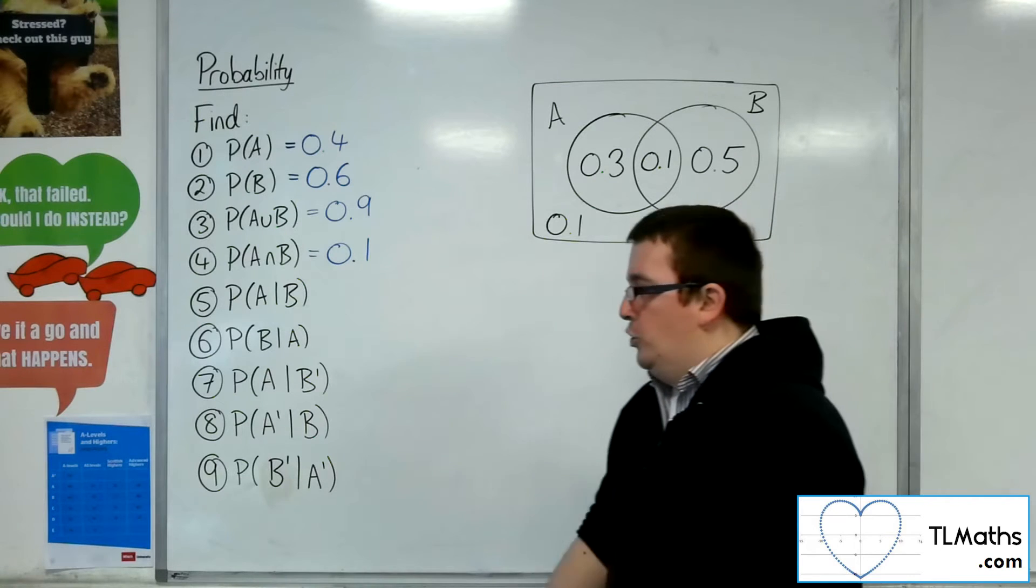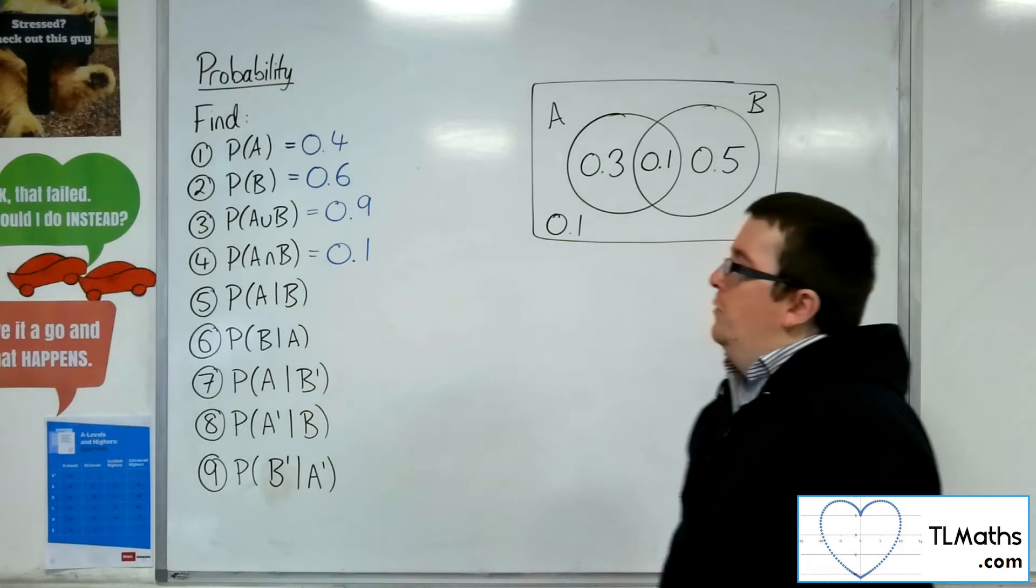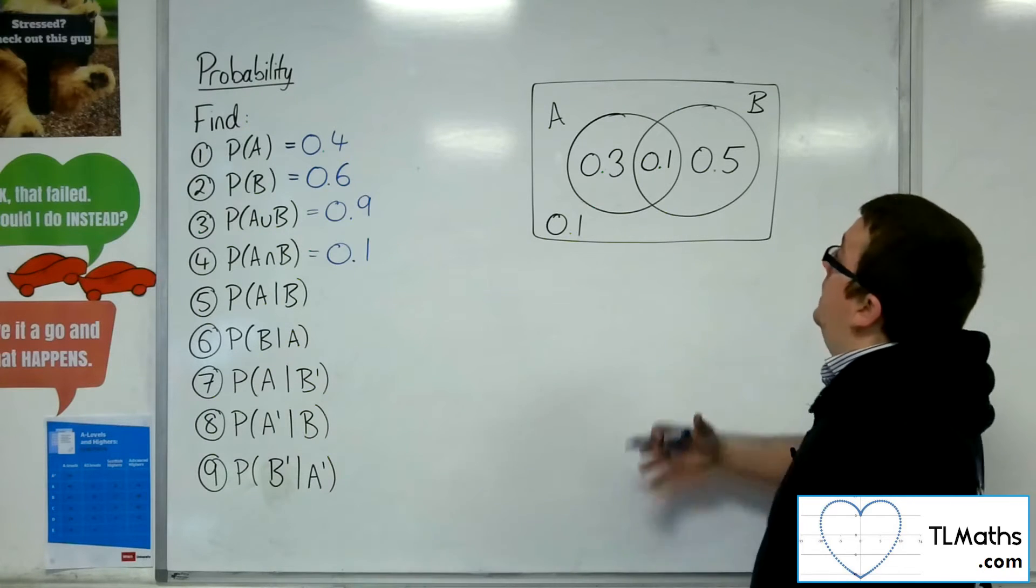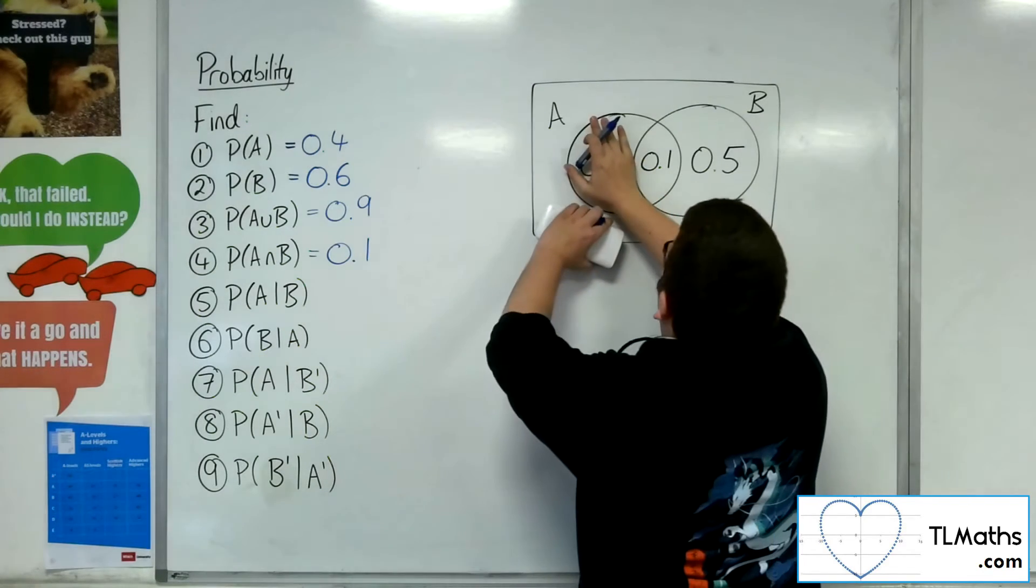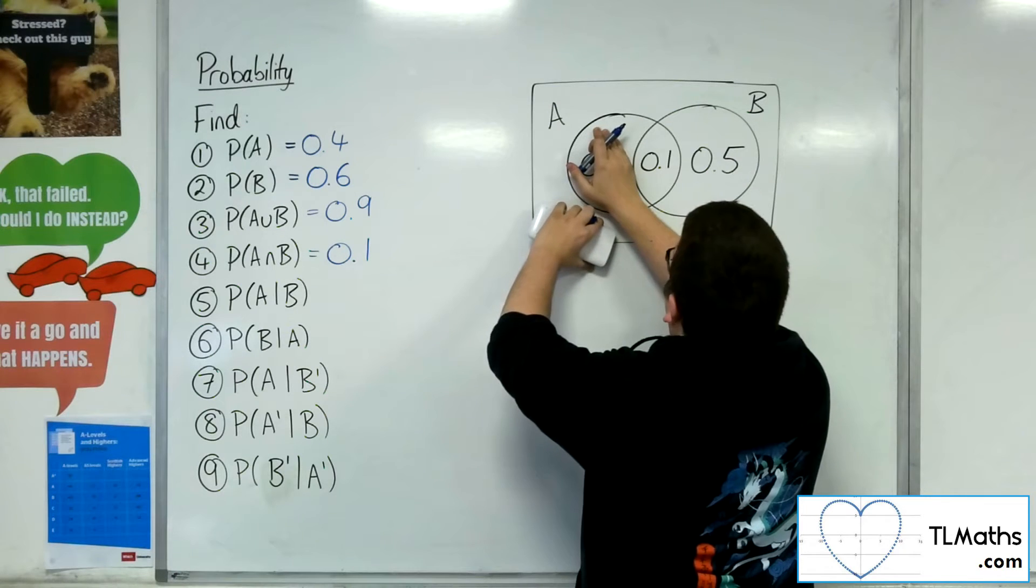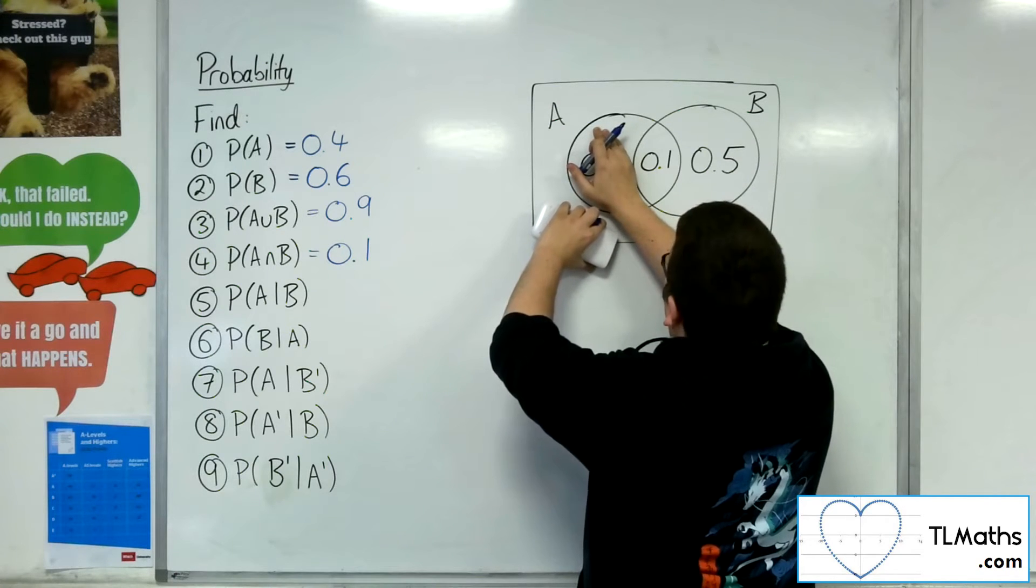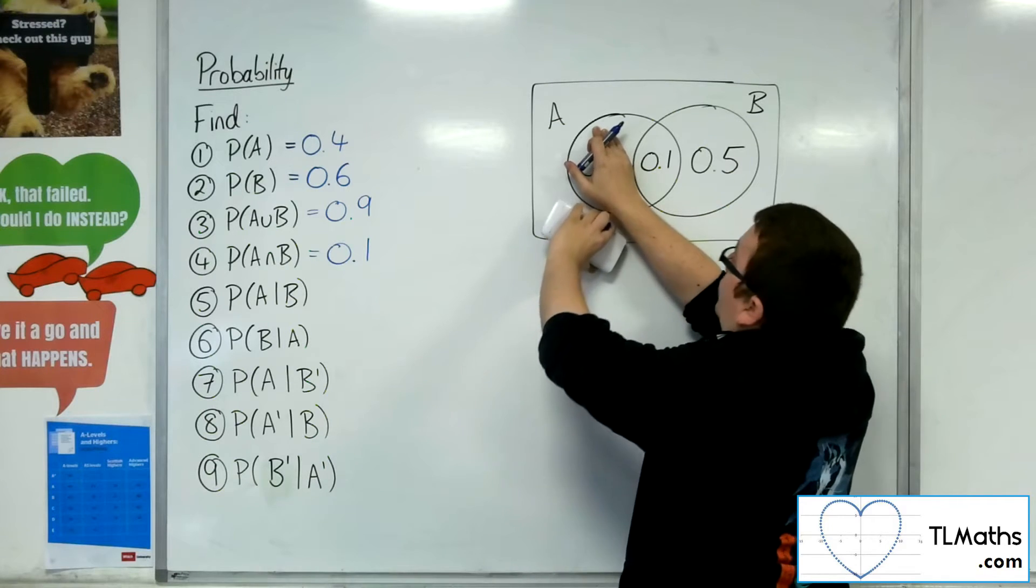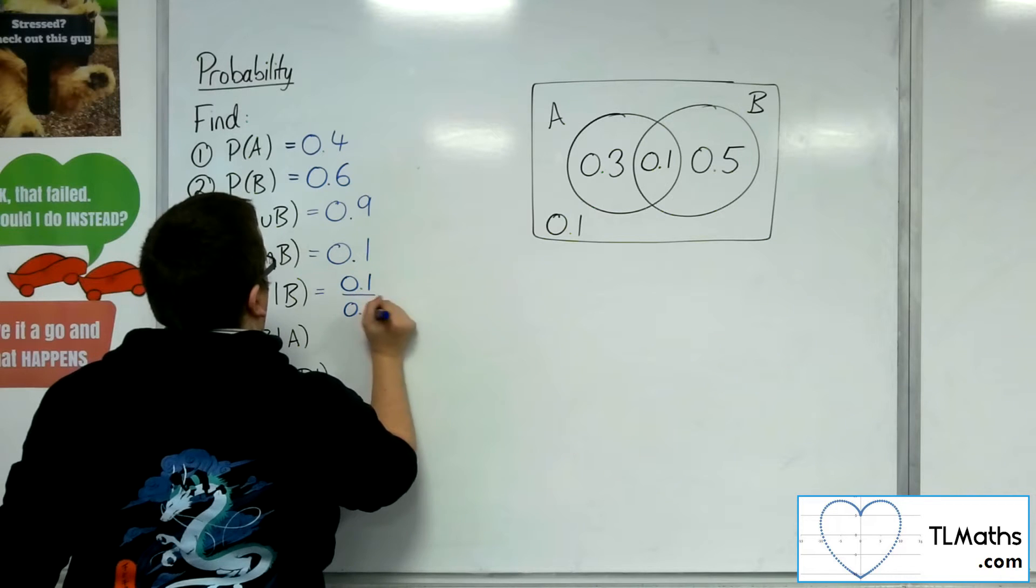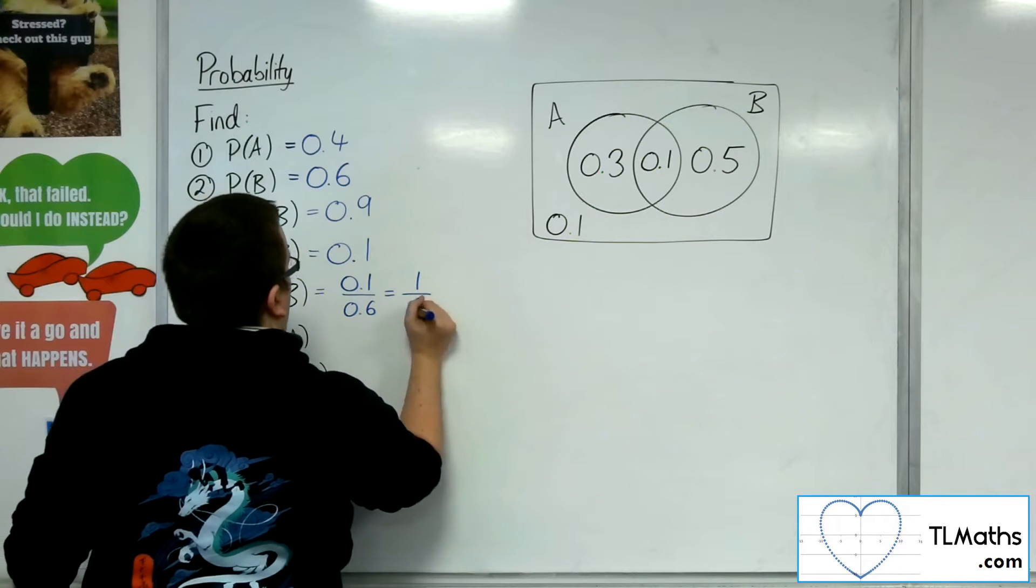Now we get to the conditional probabilities. So number five, the probability of A given B. So given B, we're just looking at B. What's the probability of A? Well, it'll be the 0.1 out of the total that you see there, 0.6. So 0.1 divided by 0.6 is one sixth.